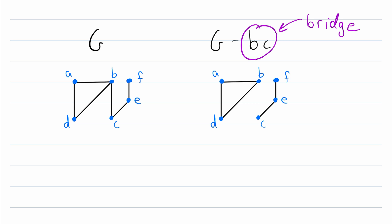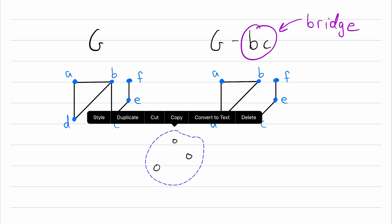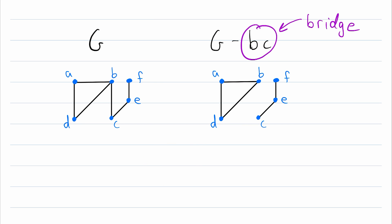Something interesting to note is that sometimes we can delete a vertex from a graph and be left with many more components than we started with. For example, consider a star graph with four vertices — if we delete the middle vertex we go from having one component to having three components. Something like this will never happen when we delete an edge.